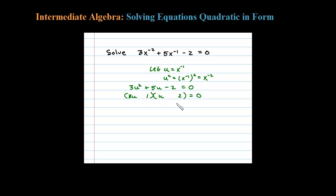Okay, and I need a 5, so I have a 6u and a 1u. To get a positive 5, the 6 better be positive and the 1 should be negative. So that'll give me 5u for my middle term, and then negative 1 times 2 is negative 2. So it's factored correctly. Then set each factor equal to 0.